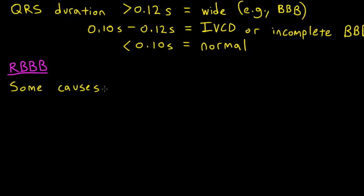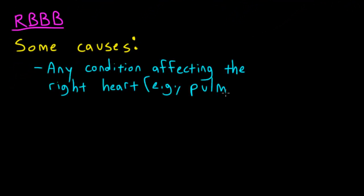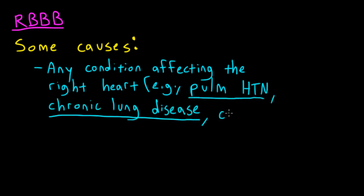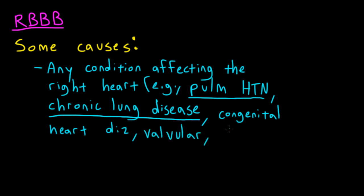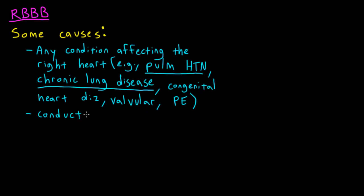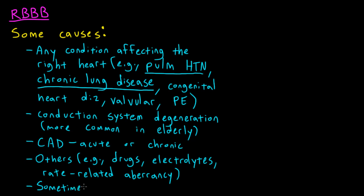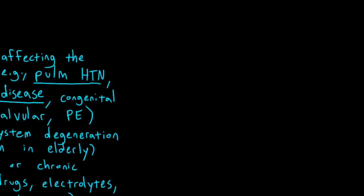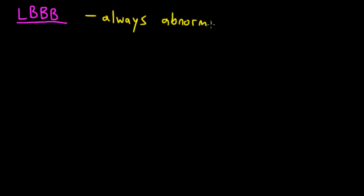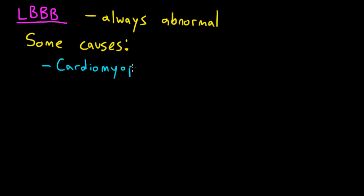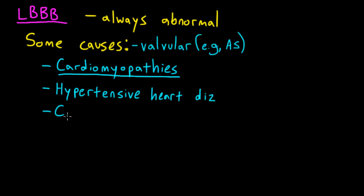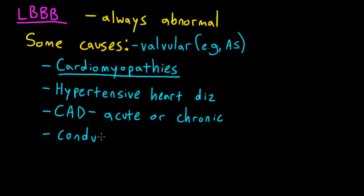Right bundle branch blocks are usually caused by things that produce right heart pathology — for example, pulmonary hypertension of any etiology, chronic lung disease, congenital heart disease, valvular heart disease, and pulmonary embolism. Other causes include degeneration of the conduction system in elderly patients and coronary artery disease, acute or chronic. Sometimes right bundle branch block can even be seen in patients with normal hearts. Left bundle branch block, on the other hand, almost always indicates something abnormal. Common causes include cardiomyopathy, advanced hypertensive heart disease, valvular heart disease, coronary artery disease, and conduction system degeneration in elderly patients.